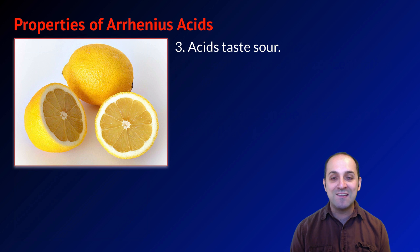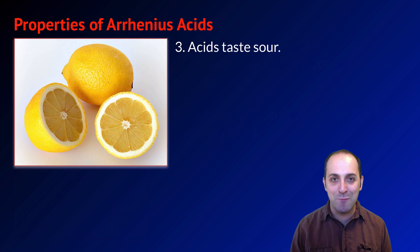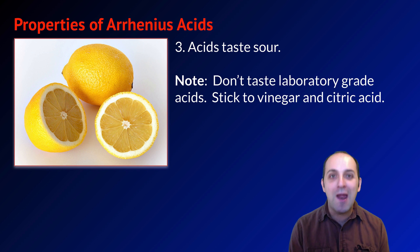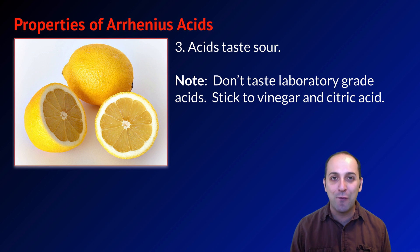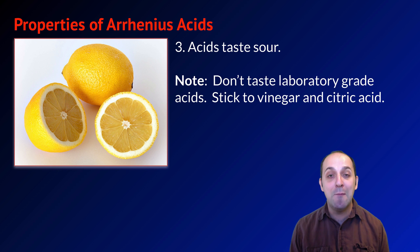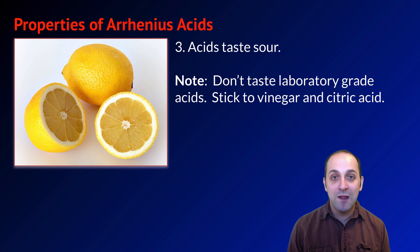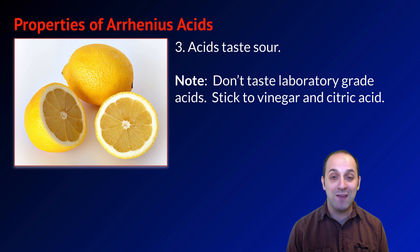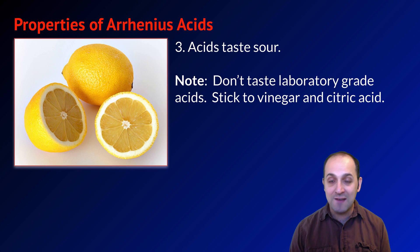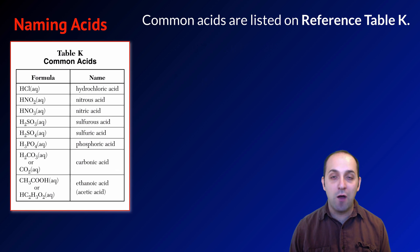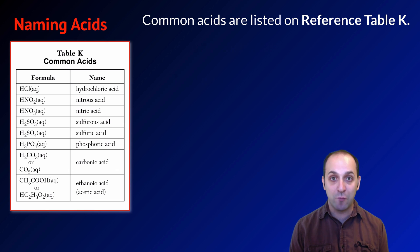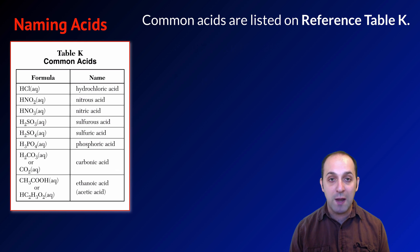The third property of Arrhenius acids is that they taste sour. You should never taste laboratory-grade acids, but vinegar and citric acid are examples of acids you may have tasted that are sour. Now that we have a handle on properties of Arrhenius acids, let's talk about how we name them. Common acids are listed on Reference Table K, but you do need to be able to name acids not on that table.